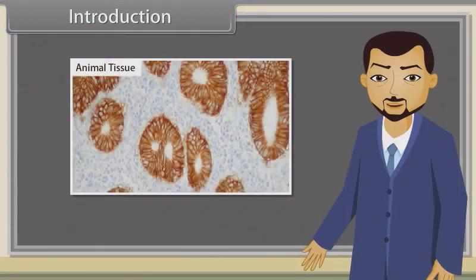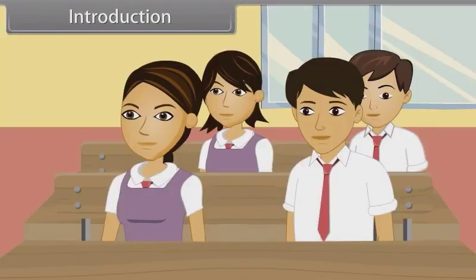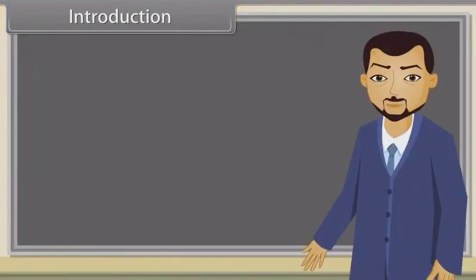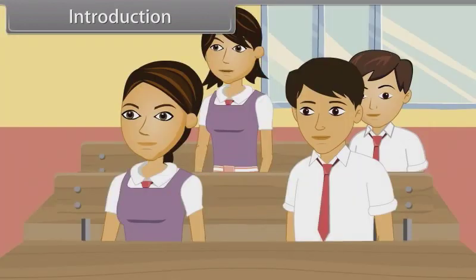All the animals are made up of tissues. Sir, how many kinds of tissues in animals are present? There are four types of animal tissues.